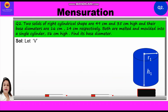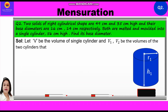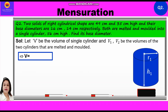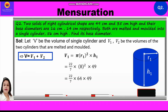Let's start with the solution. Let V be the volume of the single cylinder and V1, V2 be the volumes of the two cylinders that are melted and molded. This implies V equals V1 plus V2. Now, V1 equals pi R1 squared into H1. Substituting: 22 upon 7 into 8 squared into 49, which equals 22 upon 7 into 64 into 49, which equals 9,856 cm³. Volume of the first cylinder is 9,856 cm³.